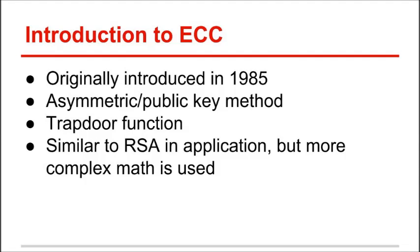The idea of ECC was originally introduced and suggested in 1985, and it is an asymmetric or public key cryptography method, similar to RSA or Diffie-Hellman. It is not an entirely new crypto system, but just a way to do public key or asymmetric cryptography. Just like RSA and public key cryptography in general, it relies on a trapdoor function, and in terms of applications it's similar to RSA and Diffie-Hellman, but more complex math is used.